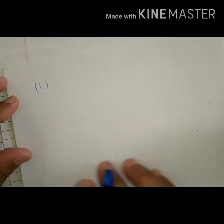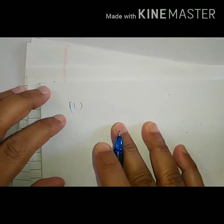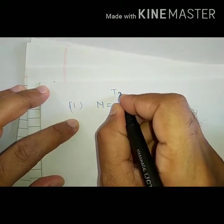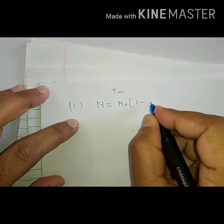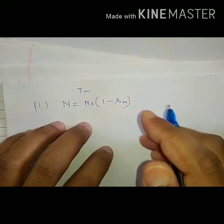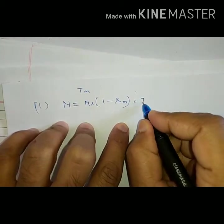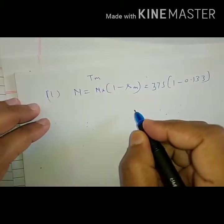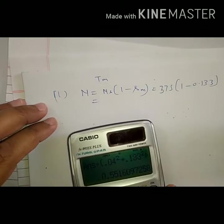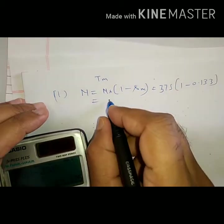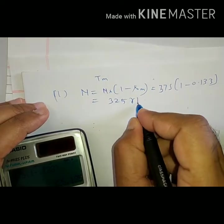Now let us find speed. Second is the speed. Speed when T is Tmax is given by NS times 1 minus S, where S here is SM because they are asking speed at maximum torque. So it is 375 times 1 minus 0.133, which comes as 325 RPM.